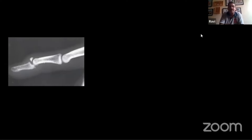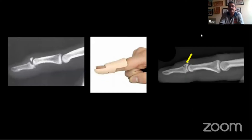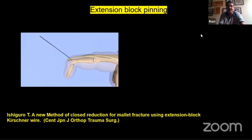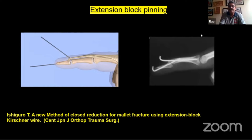Taking the example of a bony mallet finger — you can see the joint is not congruent, but using a splint you can get it back into a good position. If it heals in about five to six weeks in the splint, you get a good result. Ishiguro, in 1994, described the technique of extension block pinning for mallet finger. A K-wire is run just proximal to the small bony fragment, the DIP joint is extended to achieve reduction, and then another axial K-wire completes the fixation. This is a very elegant technique — only two K-wires and no other inventory required.